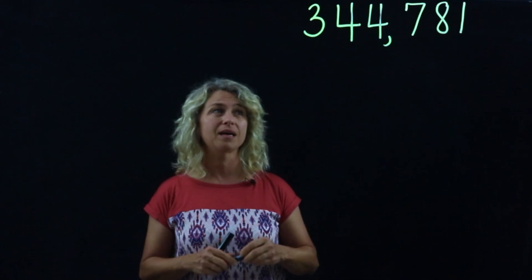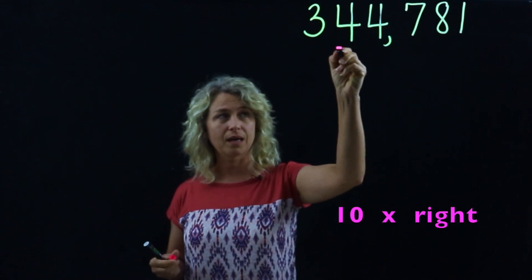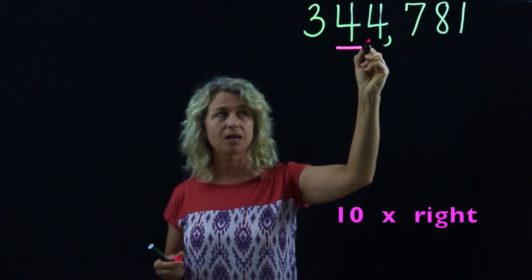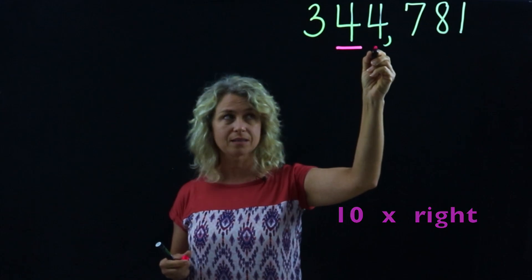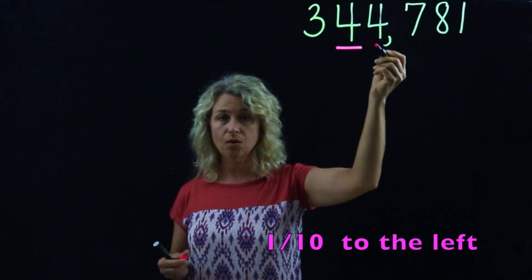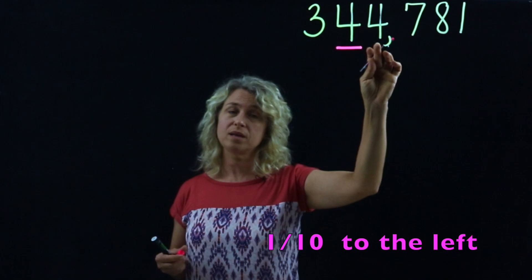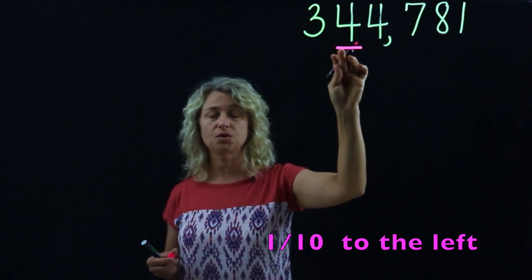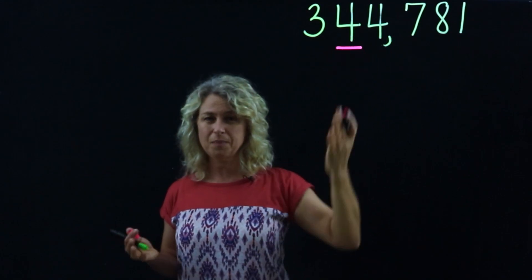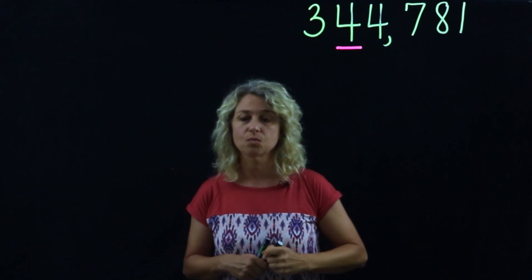Today we're going to recognize that a digit in one place is 10 times the digit to the right, or the digit to the right is one tenth of the digit to its left. Let me explain how this works.